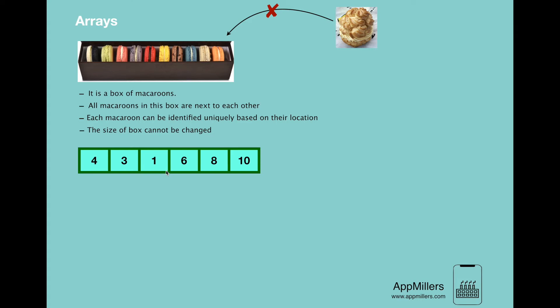Here you can easily see that the appearance of macarons box and array structure somehow looks like each other. Now let's look at the properties of this array and we will see that they are similar to the properties of this box over here.